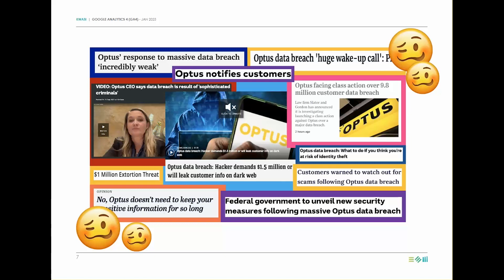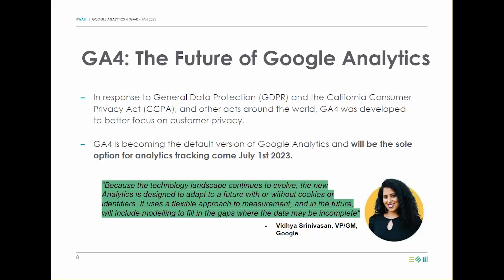Closer to our shores, the latest Optus breach is a further indication that governments are serious when it comes to this topic. We can only imagine not only the huge financial implication but also the damage to brand reputation this has had on Optus as a result of having improper security measures in place. Furthermore, a recent breach to Medicare illustrates the importance. Companies like Google are constantly under pressure and scrutiny to comply and safeguard consumer data. Google Analytics 4 was developed to better focus on customer privacy in response to GDPR, the California Consumer Privacy Act or CCPA, and other acts around the world.